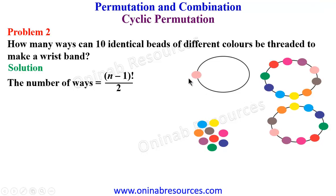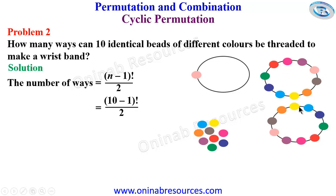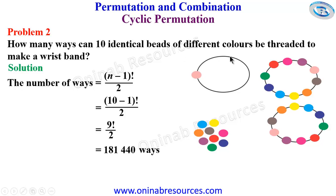We are then going to arrange the remaining 9 beads round it. The number of ways of positioning the first bead to form the edge is only 1 factorial. Then the number of ways of arranging the remaining ones is going to be (10 minus 1) factorial over 2. We divide by 2 because they can be turned around. So we have 9 factorial over 2, and that gives 181,440 ways of arranging 10 identical beads of different colors round a circular ring to make a wrist band.